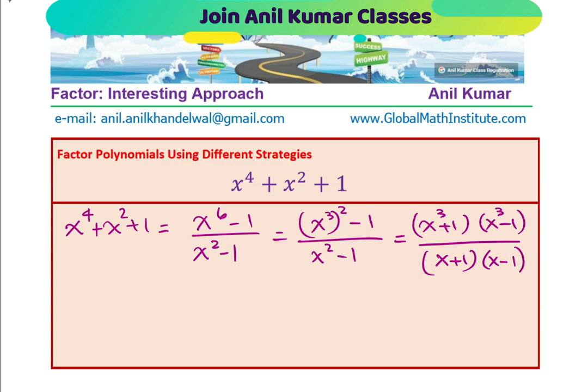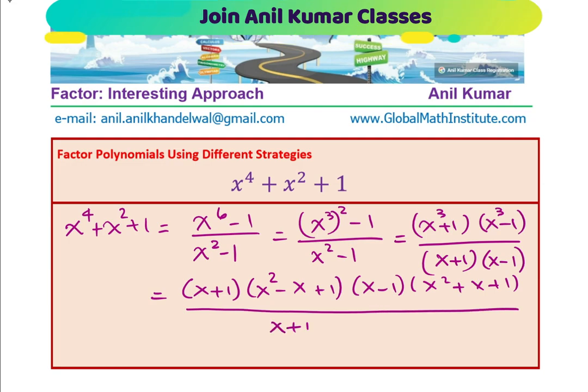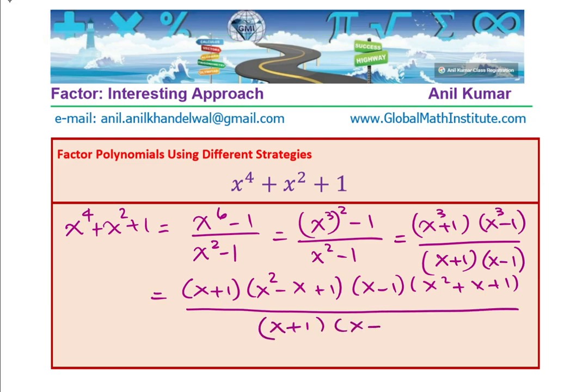Now, difference of cubes and sum of cubes can also be factored. So, we get the numerator as x plus 1 times x square minus x plus 1 and x cube minus 1 can be factored as x minus 1 times x square plus x plus 1. The denominator being x plus 1 times x minus 1.